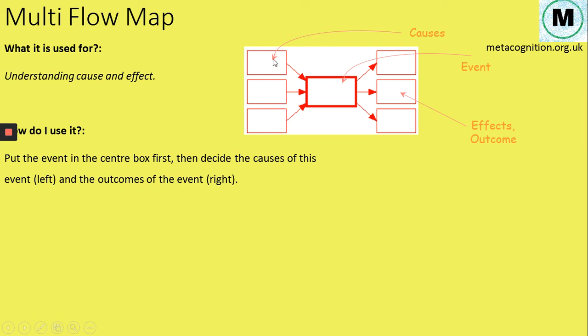And then once you've done that you look at the outcomes of that event, what effects did that event have, and you draw arrows off into these boxes. So causes on the left, effects on the right, but always starting with the event.